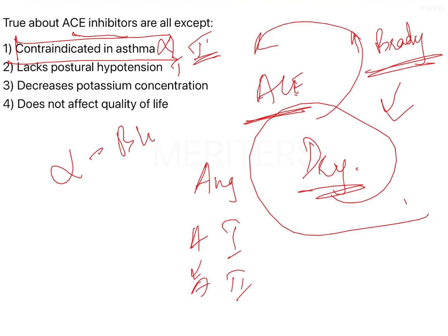It does not affect the quality of life - this is again a true statement, because the side effects of ACE inhibitors are much stronger than the side effects of ARBs. Angiotensin receptor blockers are actually much more effective compared to ACE inhibitors because the side effects of ARBs are much lesser. That is why hypertension guidelines today prefer using ARBs over ACE inhibitors, as they help improve quality of life. Cardioselective beta blockers also importantly improve the life of the patient, and that is why option number 4 is also true.